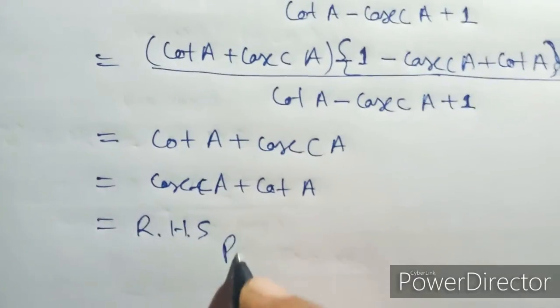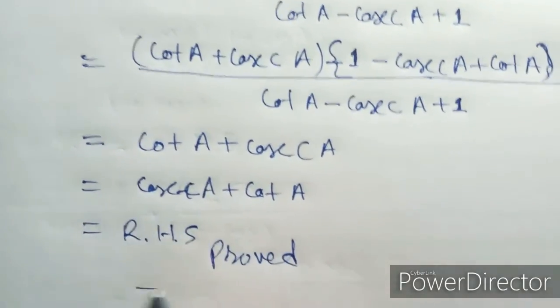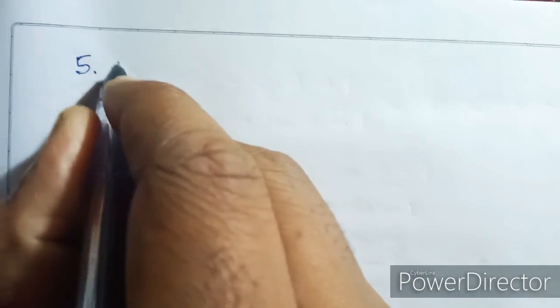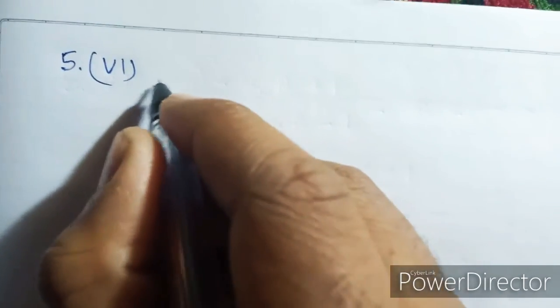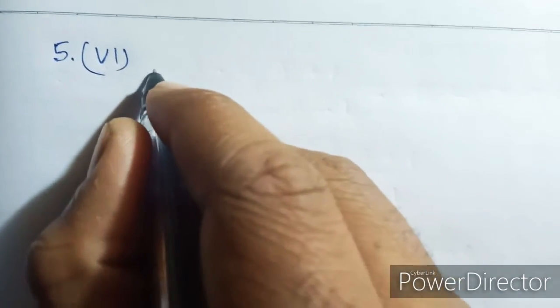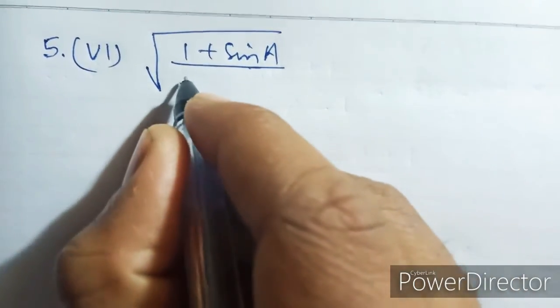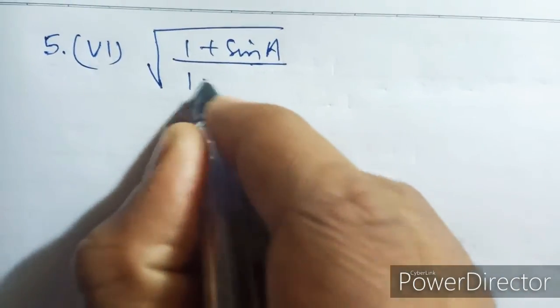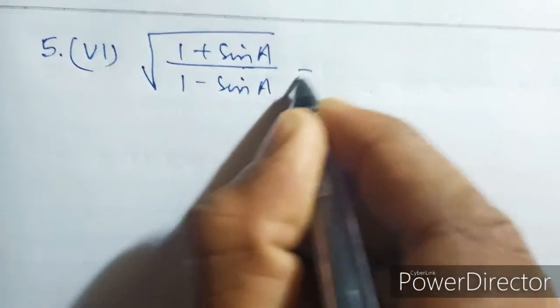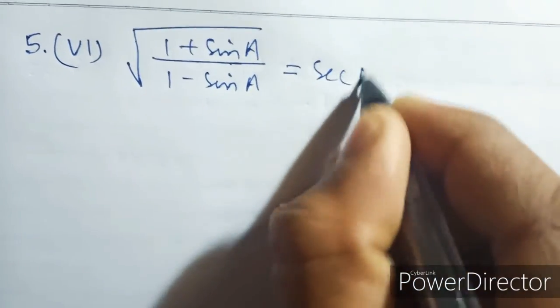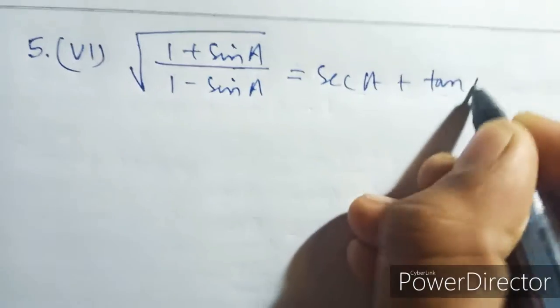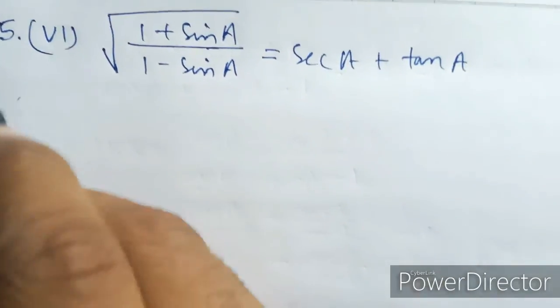So left hand side equal right hand side. Proof complete. Next: root over one plus sin a by one minus sin a equal sec a plus tan a. Solution: